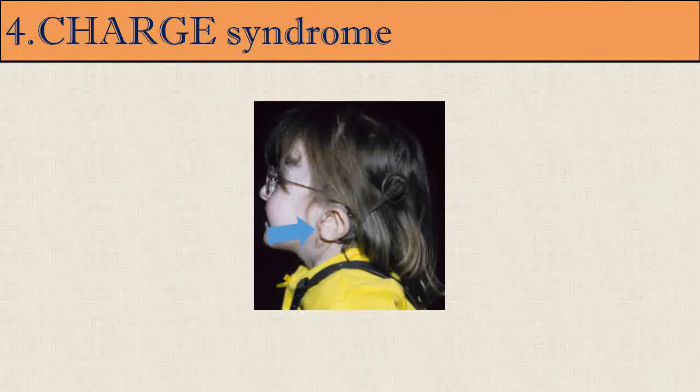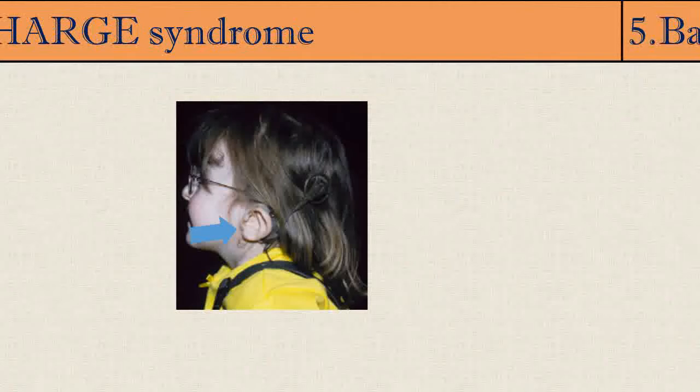The fourth disease is CHARGE Syndrome, formerly known as CHARGE Association — a rare syndrome caused by a genetic disorder, first described in 1979. The acronym CHARGE applies to newborn children with congenital features of: Coloboma of the eye, Heart defects, Atresia of the nasal choanae, Retardation of growth and/or development, Genital and/or urinary abnormalities, and Ear abnormalities and deafness.